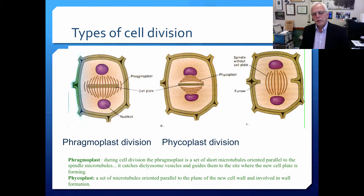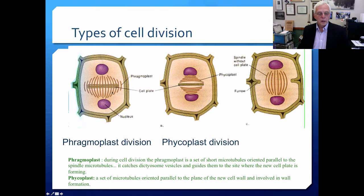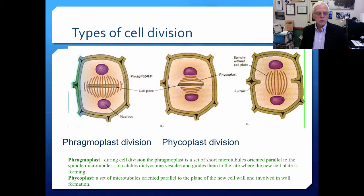You may wonder what phragmoplast and phycoplast cell division are. In phragmoplast division, during cell division, the phragmoplast is a set of short microtubules oriented parallel to the spindle microtubules. The difference between phragmoplast division and phycoplast division is the different orientation of the various tubules with respect to the cell plate. These are ways in which we trace back the lineages of evolution of plants — higher plants and the green algae.